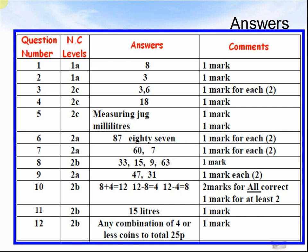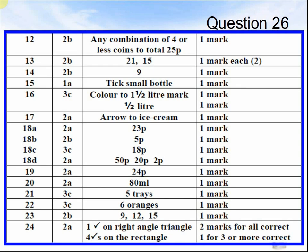Question 10: 8 plus 4 equals 12; 12 take away 8 equals 4; 12 take away 4 equals 8. Question 11: 15 litres. Question 12: any combination of 4 or fewer coins totalling 25p. Questions 13 and 14: 21 and 15. Question 14: 9. Question 15: tick the small bottle. Question 16: colour to the 1.5 litre mark; to get 2 litres add another half a litre. Question 17: arrow to ice cream.